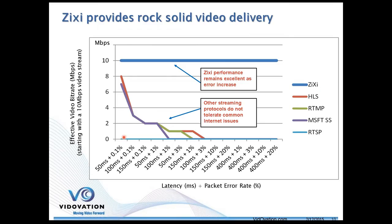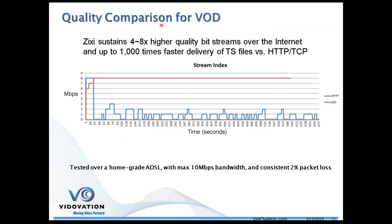Even for video on demand, the network can't tell the difference between a live stream and a VOD stream — the user still wants minimal buffering at startup and then continuous playout. In one example over a residential-grade 10-meg ADSL circuit with consistent 2% packet loss, Zixi ramps up quickly to about 8 megs and stays rock solid, while the HTTP circuit shows zero throughput and very poor average performance.